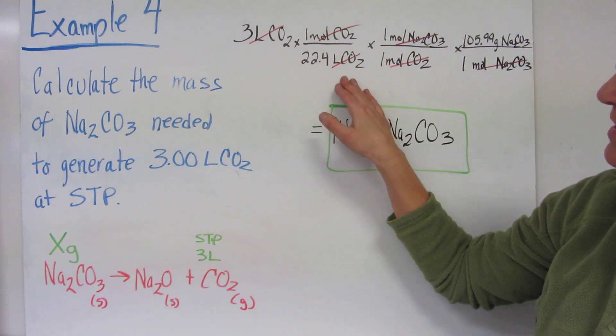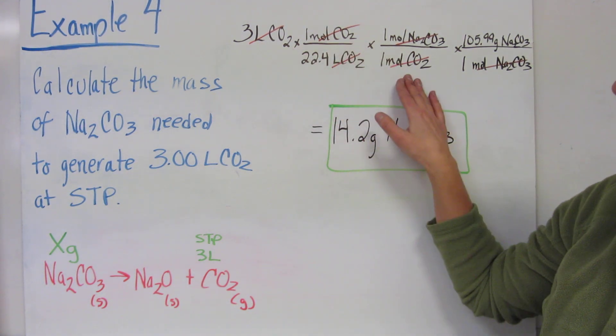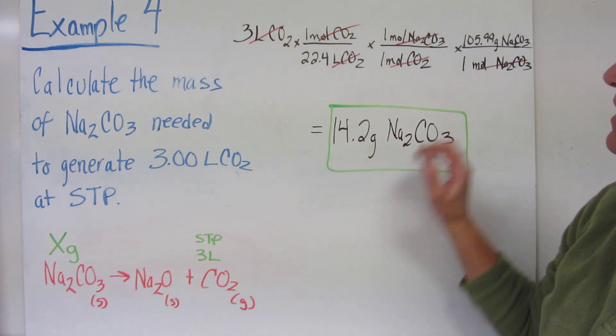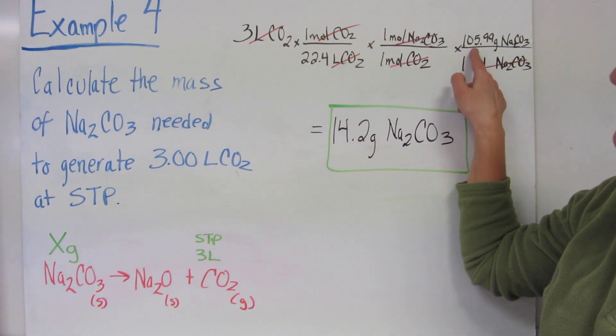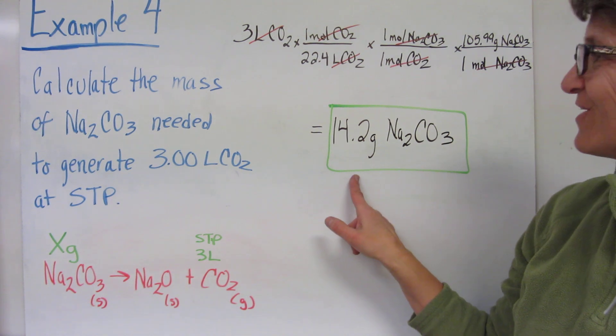Cancel your units: liters of carbon dioxide cancel, moles of carbon dioxide cancel, moles of sodium carbonate cancel. 3 divided by 22.4 times 105.99. When rounded to three sig figs, we'll give you 14.2 grams of sodium carbonate.